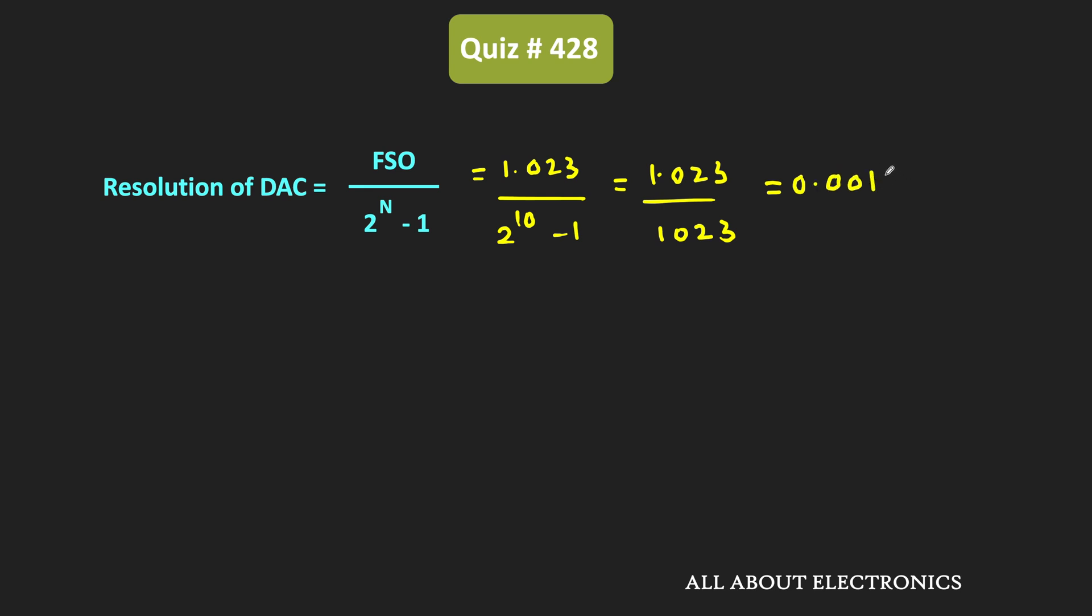Or we can say that equals 1mV. That means the resolution of the DAC is equal to 1mV. If we increase the data input by 1 bit, there will be a change of 1mV in the DAC output.